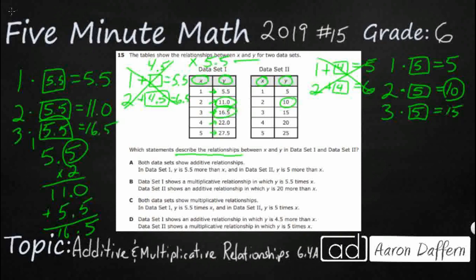Now we need to describe the answer. Data set 1 is times 5.5, and data set 2 is simply times 5 — but they're both multiplicative relationships. Let's look at our answer choices. A: both data sets show additive — nope, that's incorrect because we are not adding. B: data set 1 shows a multiplicative relationship in which 5.5 — that works — but data set 2 shows an additive relationship — nope. C: both data sets show multiplicative relationships — data set 1 times 5.5, data set 2 times 5. Yes, that is our answer: C.